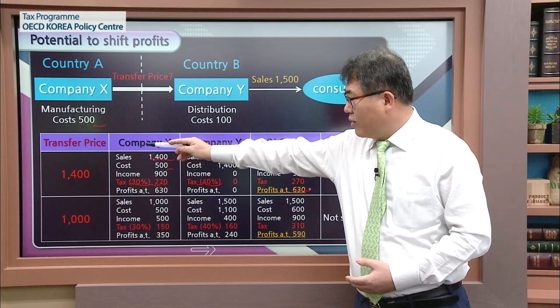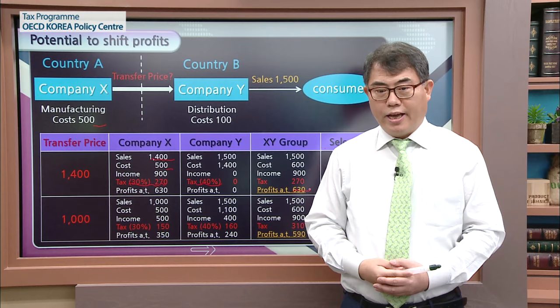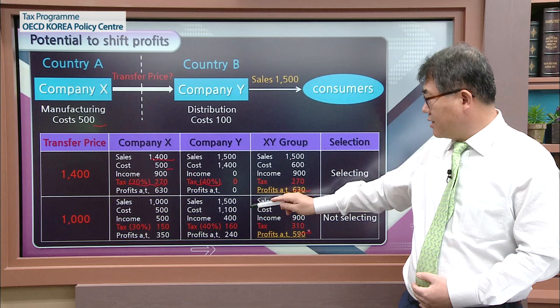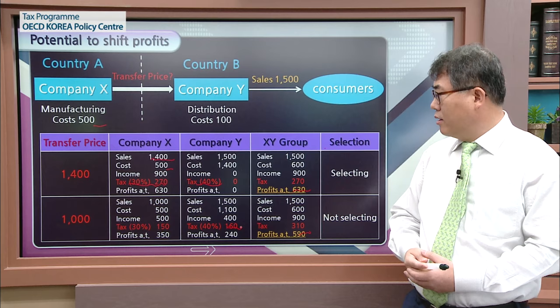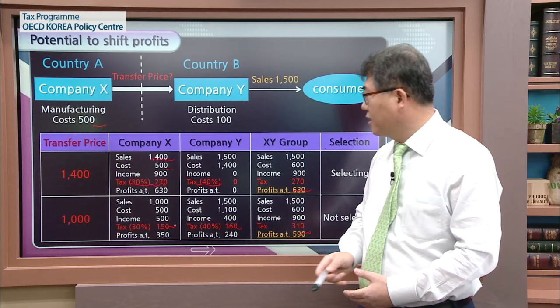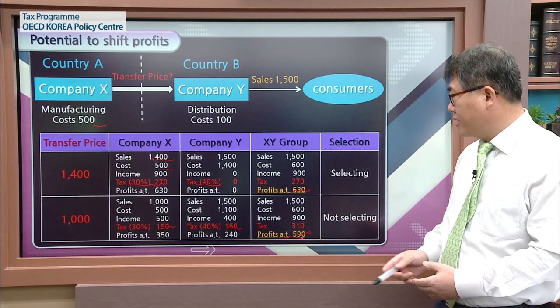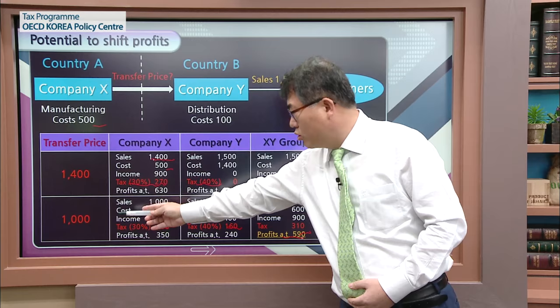What happens if they change the transfer price from 1,400 to 1,000? Then their after-tax profits reduce to 590, because they have to pay more tax in Country B — 160 — even though they can save 120 of taxes in Country A. As a consequence, they have to reduce their after-tax profits by changing the transfer price from 1,400 to 1,000.